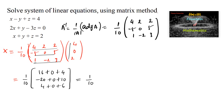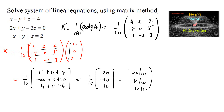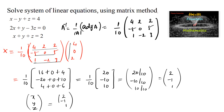So we get (1/10) × [20, −10, 10], which equals [20/10, −10/10, 10/10] = [2, −1, 1]. Therefore the variable matrix [x, y, z] equals [2, −1, 1], giving us x = 2, y = −1, and z = 1 as the solution. Thank you.